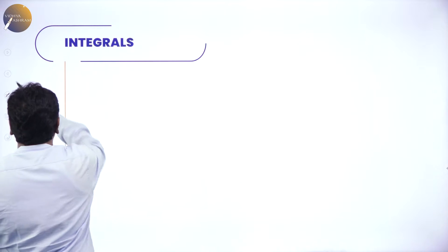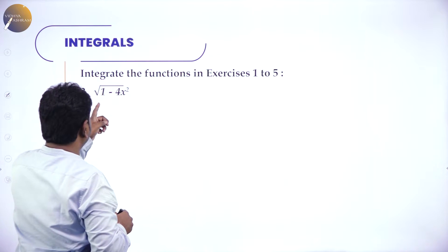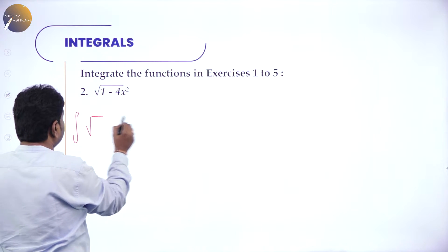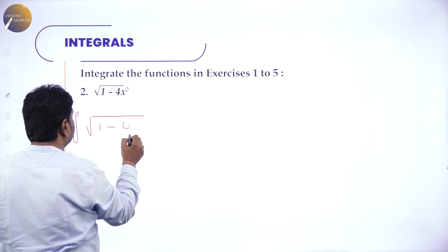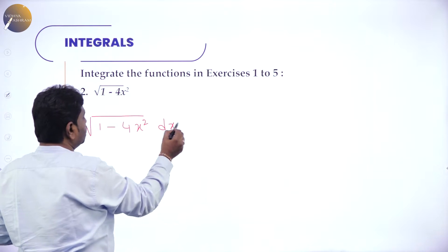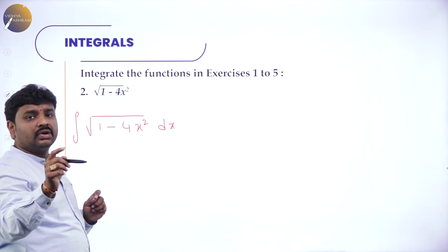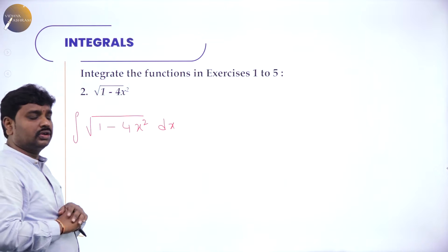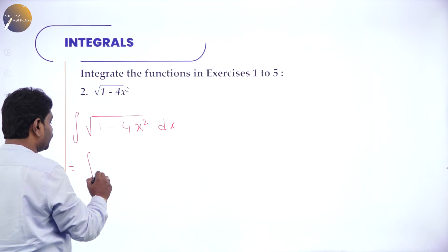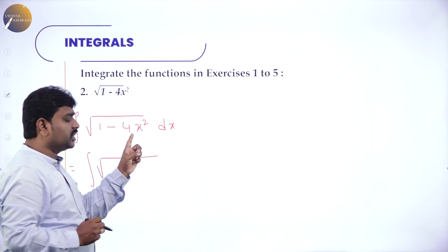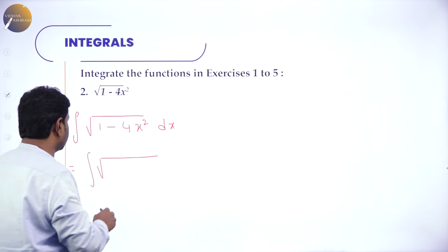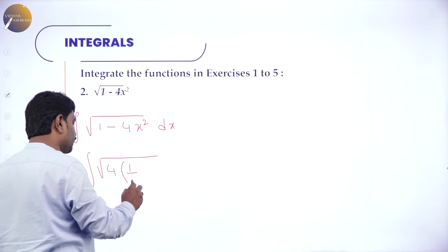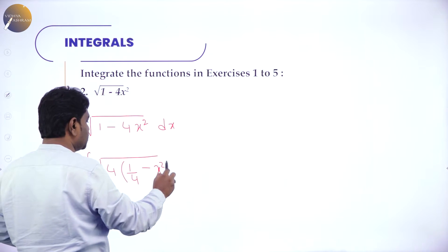Now we go to the second problem: ∫√(1 - 4x²) dx. Please understand, in the formula the coefficient of x² is 1, but here the coefficient of x² is 4. So our first task is to take 4 out. If I take 4 common, it becomes 4(1/4 - x²) dx.